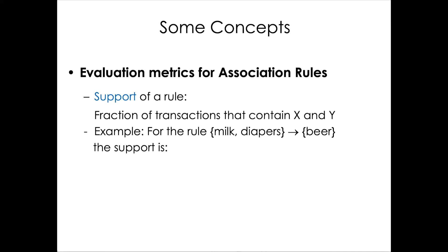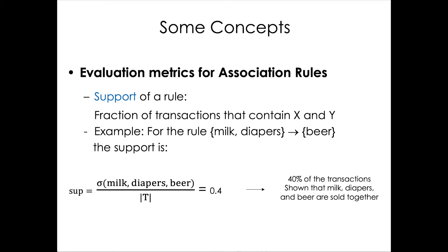How can we evaluate association rules? We use the support of a rule, which is the fraction of transactions that contain both X and Y — combining both item sets from the left and right side. For example, for the rule milk and diapers implies beer, the support is the number of transactions containing milk, diapers, and beer divided by the total number of transactions. If that is 0.4, it means 40% of transactions show that milk, diapers, and beer are sold together.